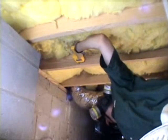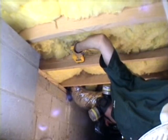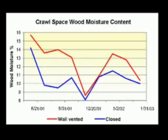In addition to space moisture measurements, we also record wood moisture content. A total of 10 pin moisture readings are periodically taken in the crawlspaces during data collection trips. The pin moisture readings parallel the space moisture readings. The closed crawlspaces have lower wood moisture content than the wall-vented crawlspaces, particularly in the summertime. Dry wood framing discourages surface mold, wood rot, and insect infestation.